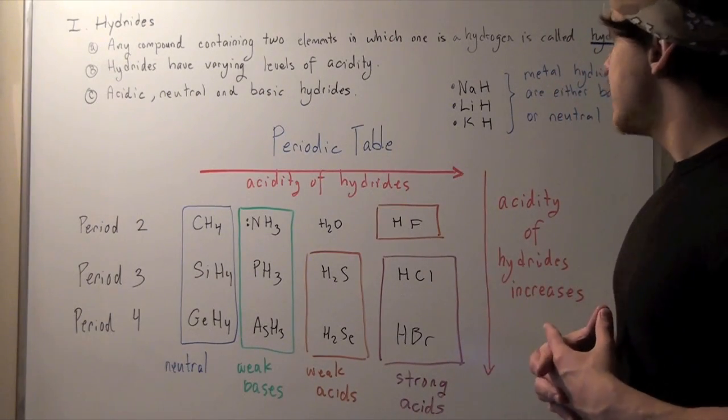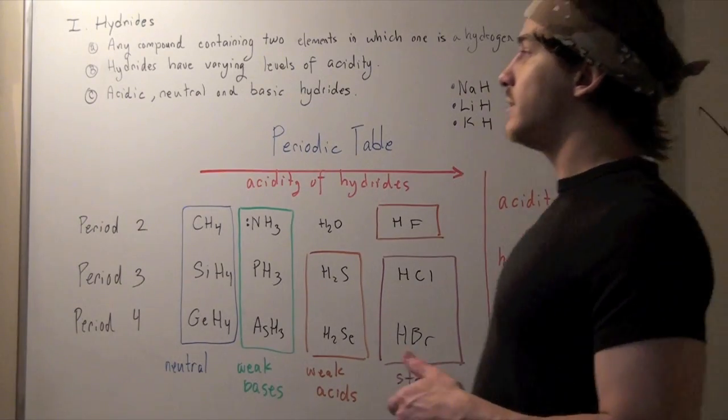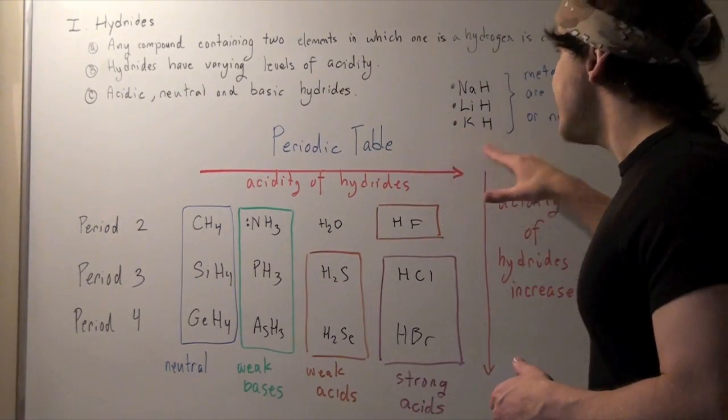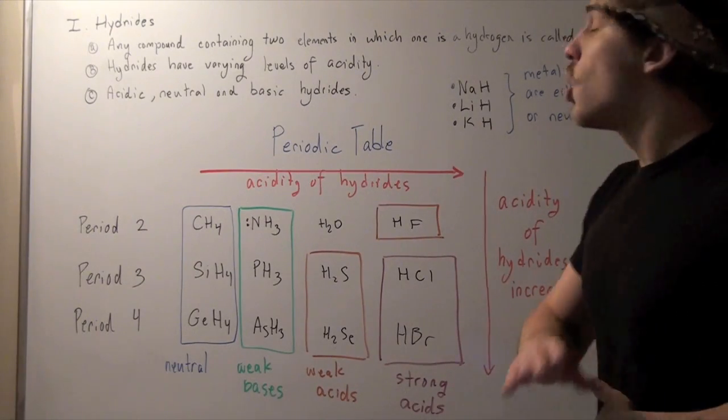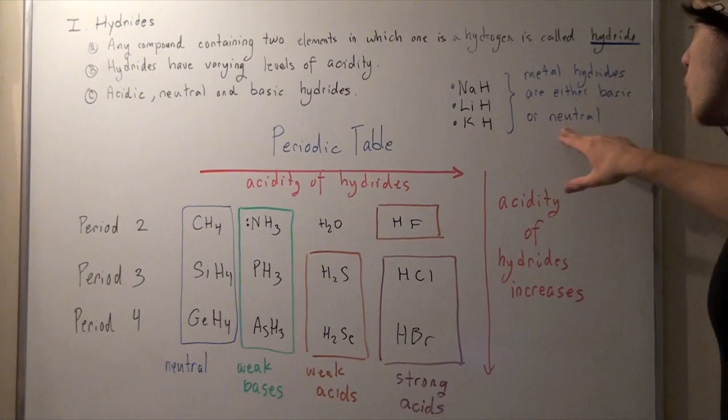For example, sodium, lithium, and potassium are all found on the left side, which means they form basic hydrides. In fact, all metal hydrides are either basic or neutral.